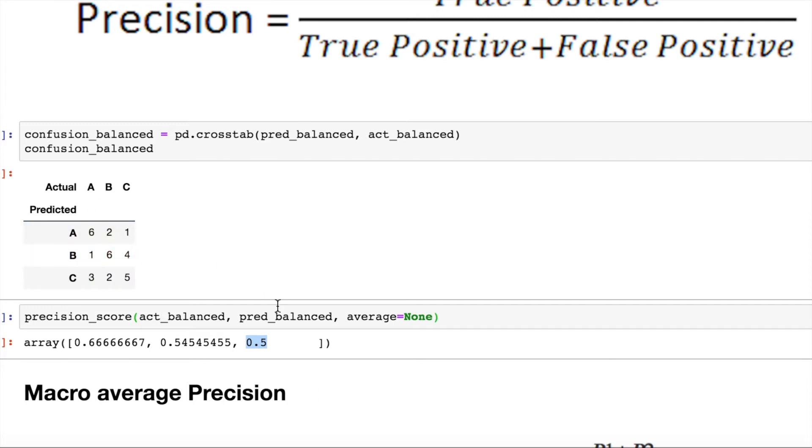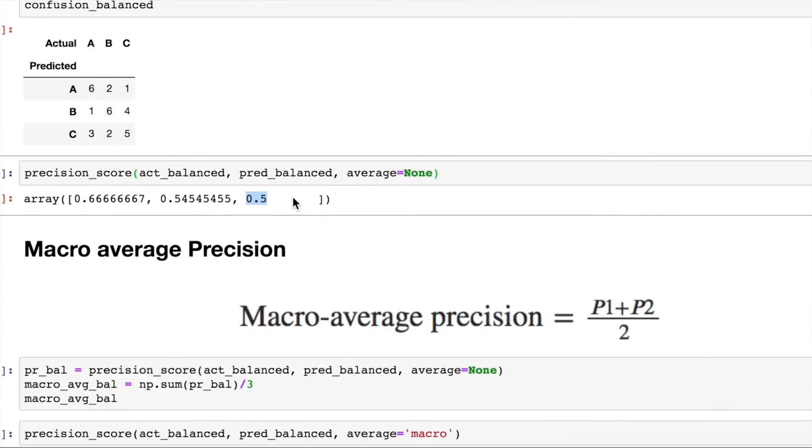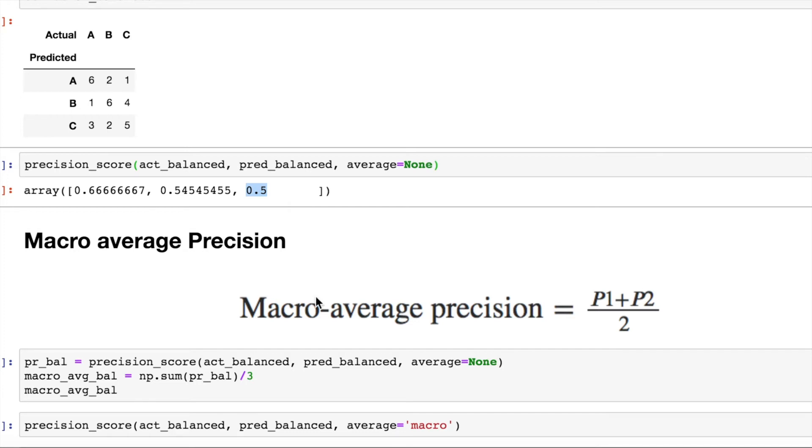We will cover this. So macro precision is basically the precision of individual classes divided by the number of classes which are there. So in our case, we have three classes. We have calculated the individual precision that is 0.67, 0.54 and 0.5. We will add the three and divide by three.